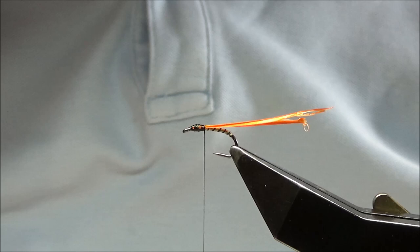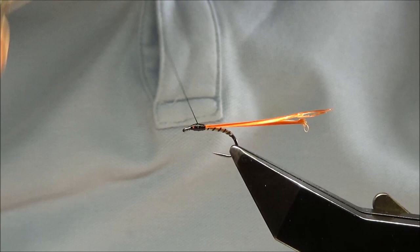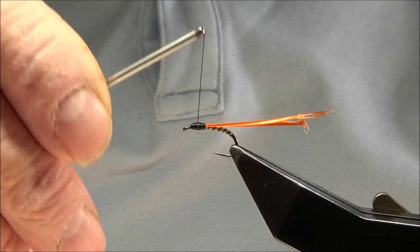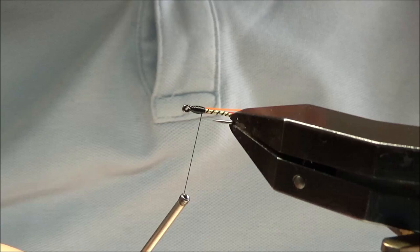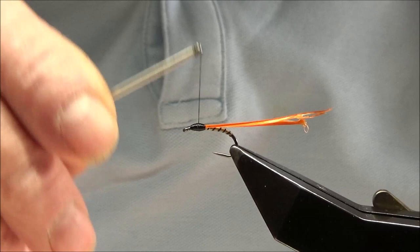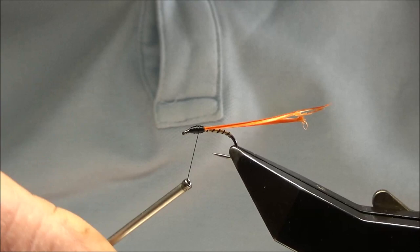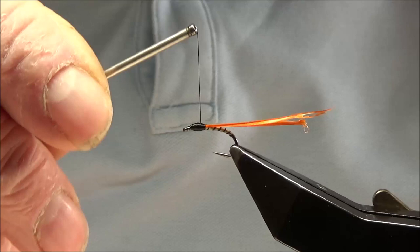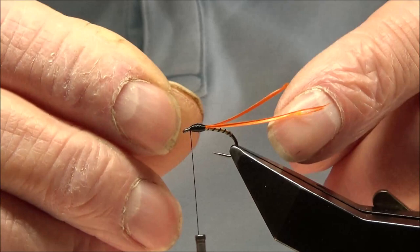Spin the bobbin anti-clockwise to spread the thread. Build the thorax up, making sure that you've covered all the bits of orange. Cover it with UV so there's no need to be that particular. Come back to the eye.